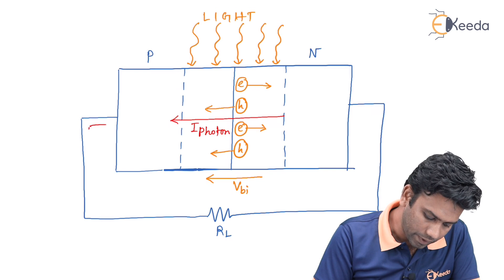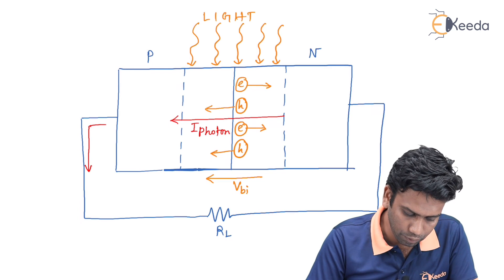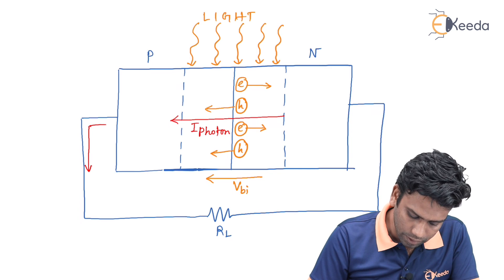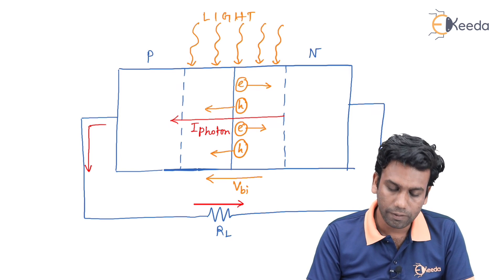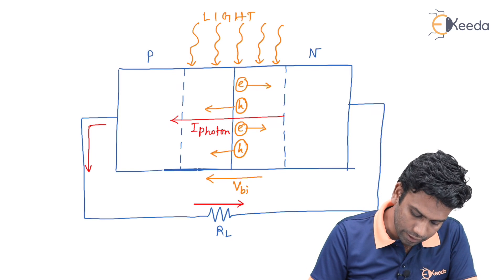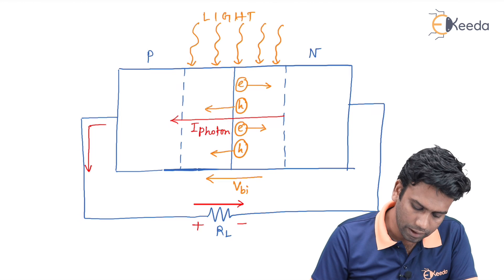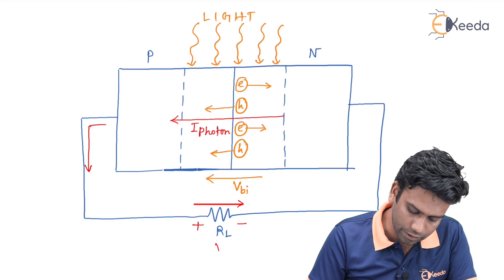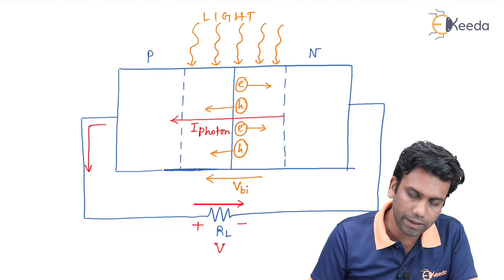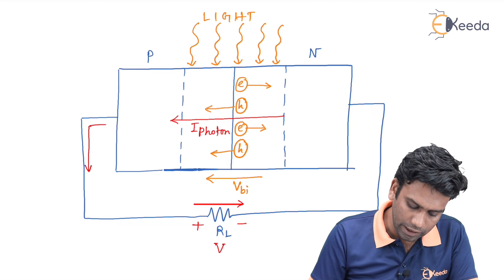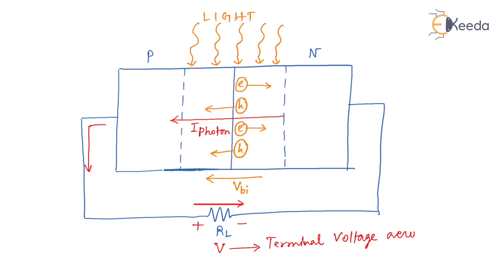This I_photon will come outside of the solar cell and will flow in the wire. During the flow of I_photon through R_L, there will be a voltage drop produced across R_L, with a positive and negative polarity. This voltage drop is called the terminal voltage across the solar cell.